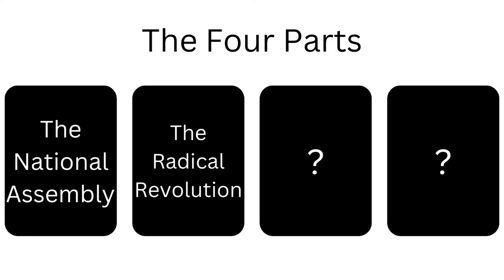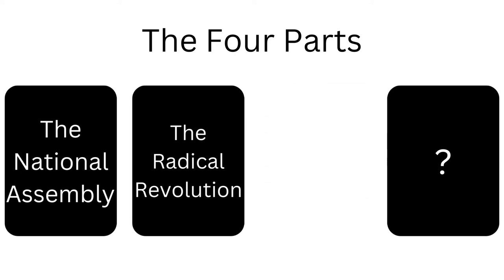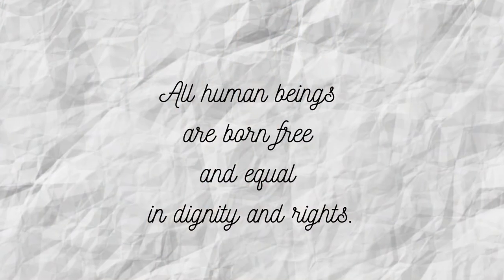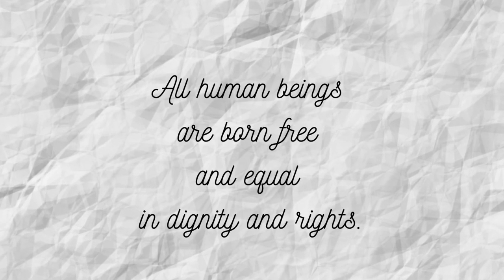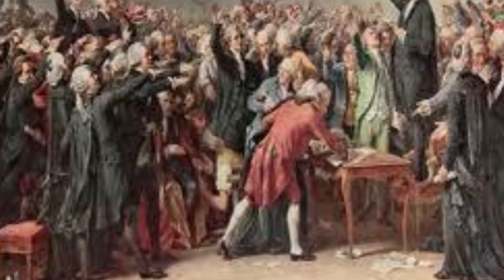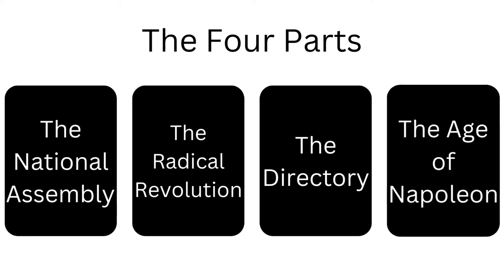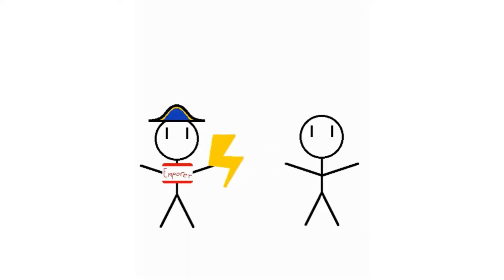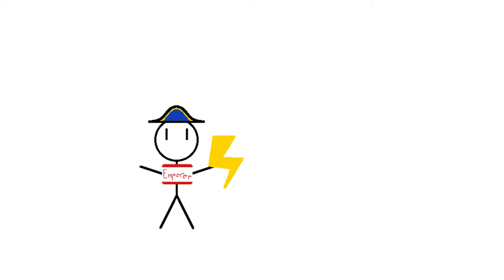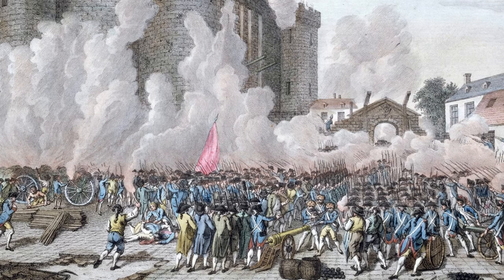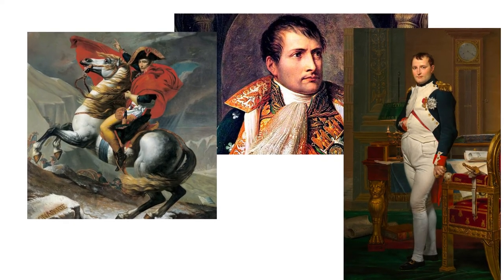This marks the beginning of the third part of the revolution: the Directory. The revolutionary government adopted a universal declaration stating all human beings are born free and equal in dignity and rights. The peace created by the Directory would not last long, as we enter the fourth part of the revolution — the age of Napoleon. A military commander named Napoleon Bonaparte seized control of the revolutionary government and declared himself emperor. While the purpose of the revolution was to end a monarchy, it is ironic that it ended with an emperor.